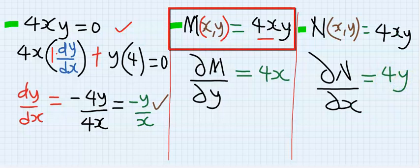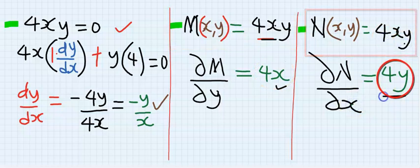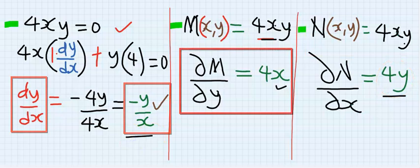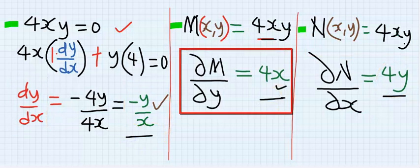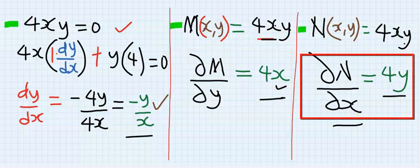You can see when I'm partial to 4x respecting only y, I got this. And when I'm partial to 4y respecting only x, I got this. You see, this is a full differentiation. This is a partial derivative of M with respect to y and this is a partial derivative of N with respect to x.